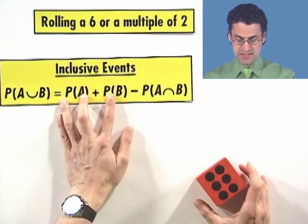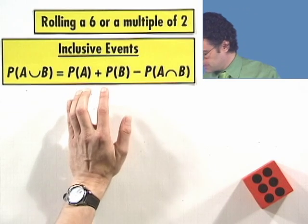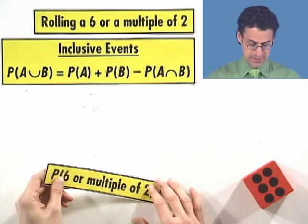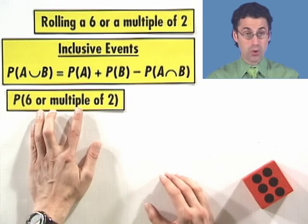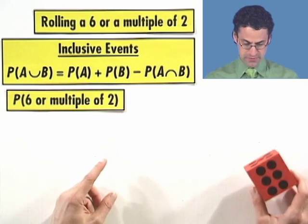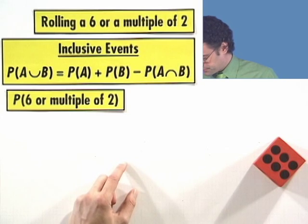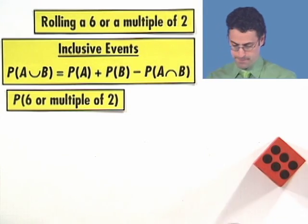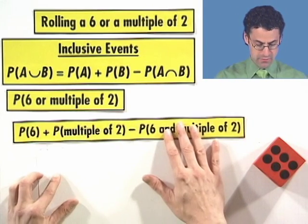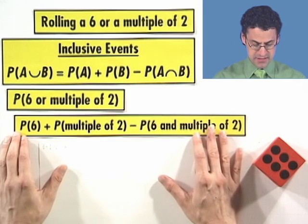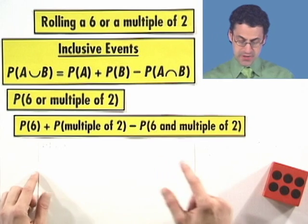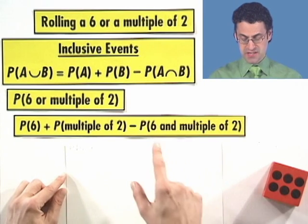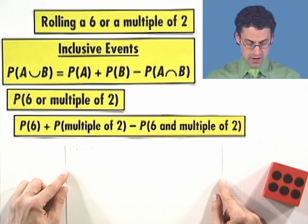So in this case, let's take a look at the question. We want to find the probability that we see a 6 or a multiple of 2. And so these are inclusive events. And so what do we do? We find the probability of 6, we add it to the probability of seeing a multiple of 2, and then we subtract off the probability of seeing a 6 and a multiple of 2.